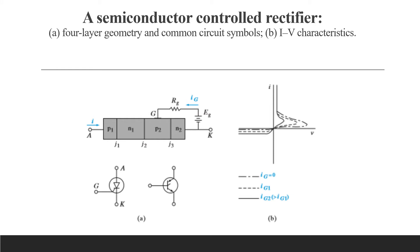We have discussed the PNPN diode in detail, but here we will understand the function of the gate, which is connected to P2. To visualize this, we note that the most important four-layer device in power circuit applications is the three-terminal SCR. This device is similar to the PNPN diode except that a gate is attached to one of the base regions.